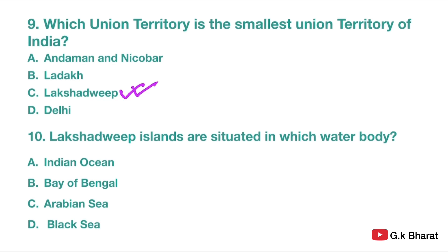Next. Lakshadweep islands are situated in which water body? Option A: Indian Ocean. Option B: Bay of Bengal. Option C: Arabian Sea. Option D: Black Sea. Correct answer is Arabian Sea.